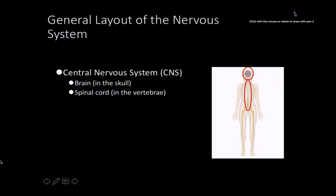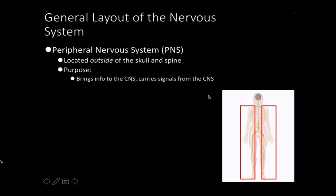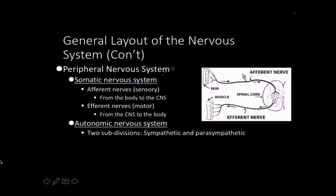So, the central nervous system — CNS — consists of the brain, located in the skull, and then the spinal cord, located in your vertebral column. The peripheral nervous system is pretty much everything outside of that, with the exception of the cranial nerves.